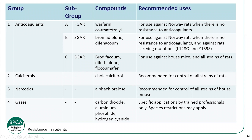Calciferol is recommended for control of all strains. Alpha-chloralose is recommended for all strains of house mice. At the bottom of the list you have gassing compounds — these are carried out by specifically trained personnel only, so you need to complete the relevant training to use them.